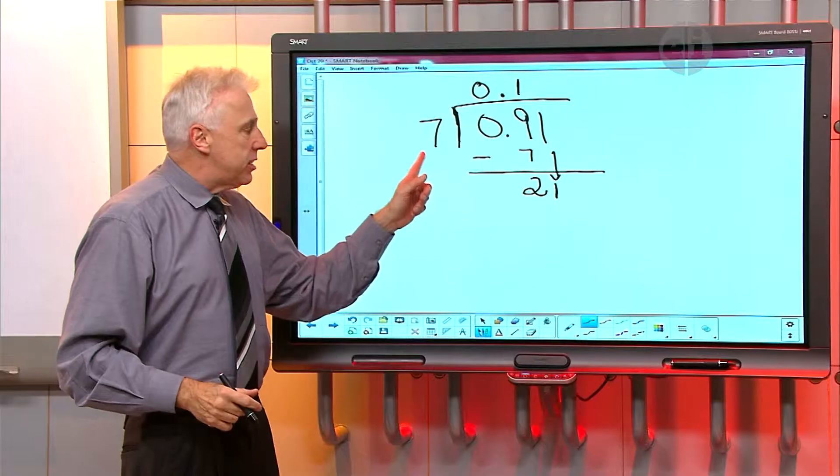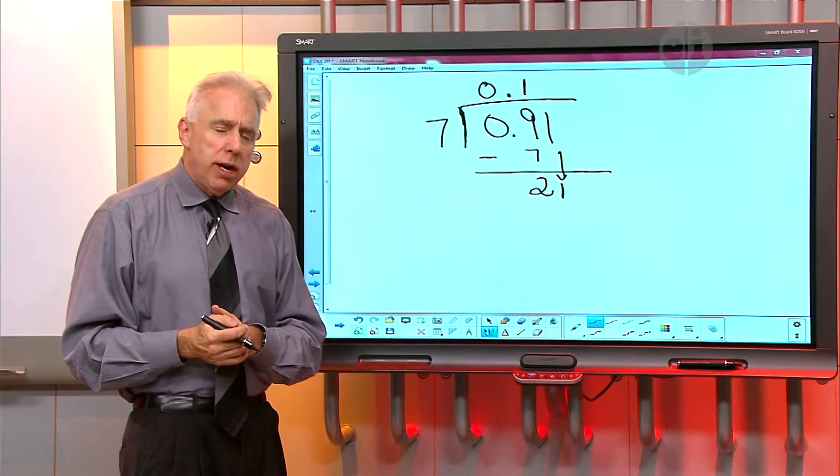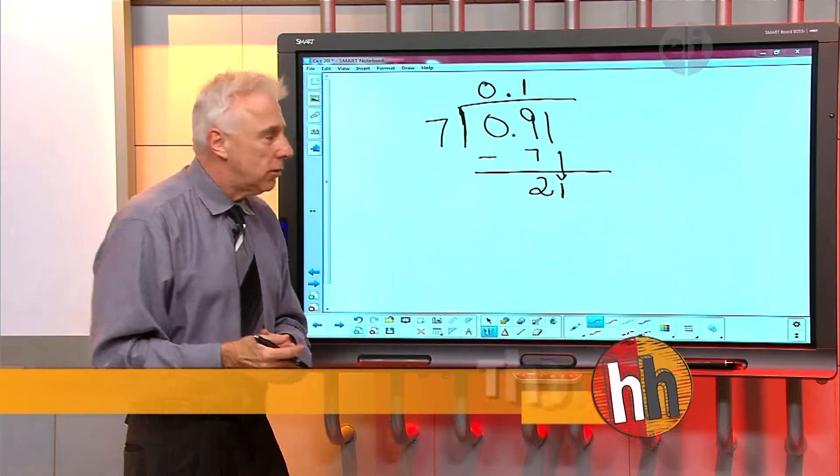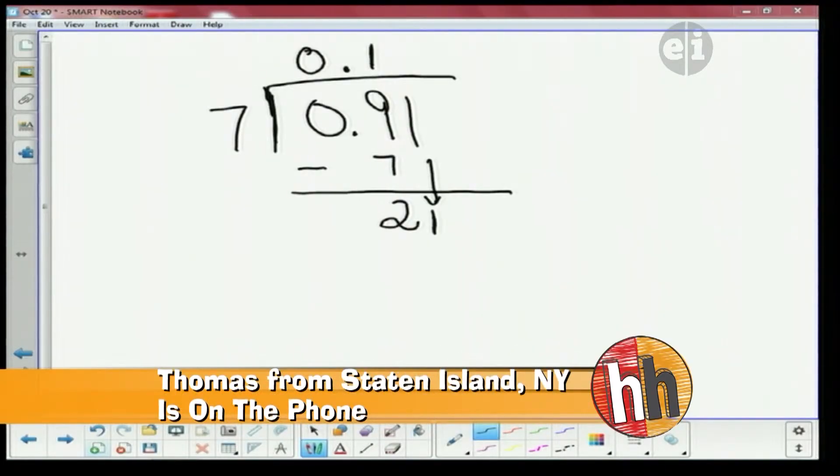And now we're going to figure out how many times seven will go into 21, right? Seven will go into 21 three times. Very good. How much of a remainder will we have? Zero. Yeah. This one worked out kind of nice.